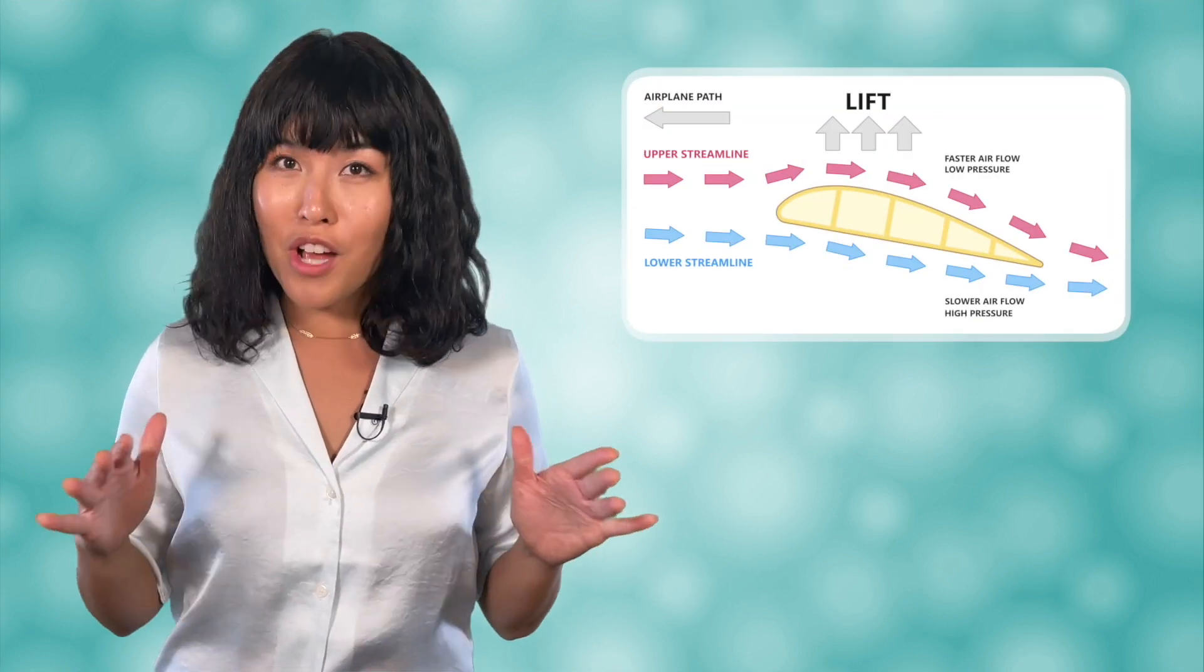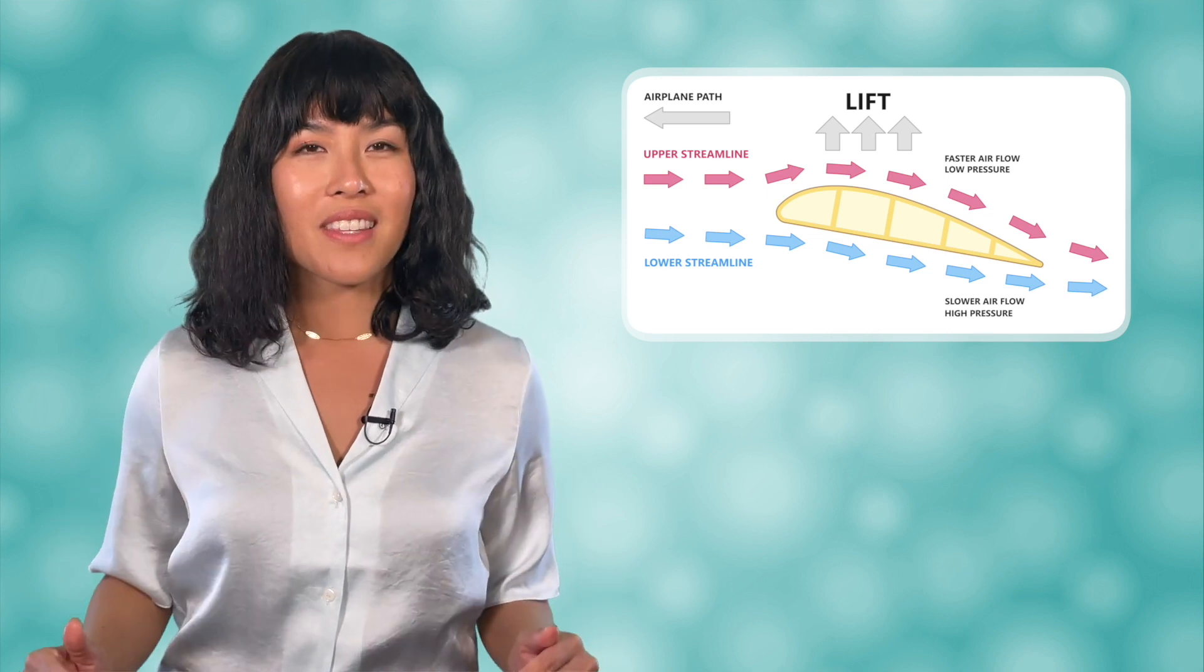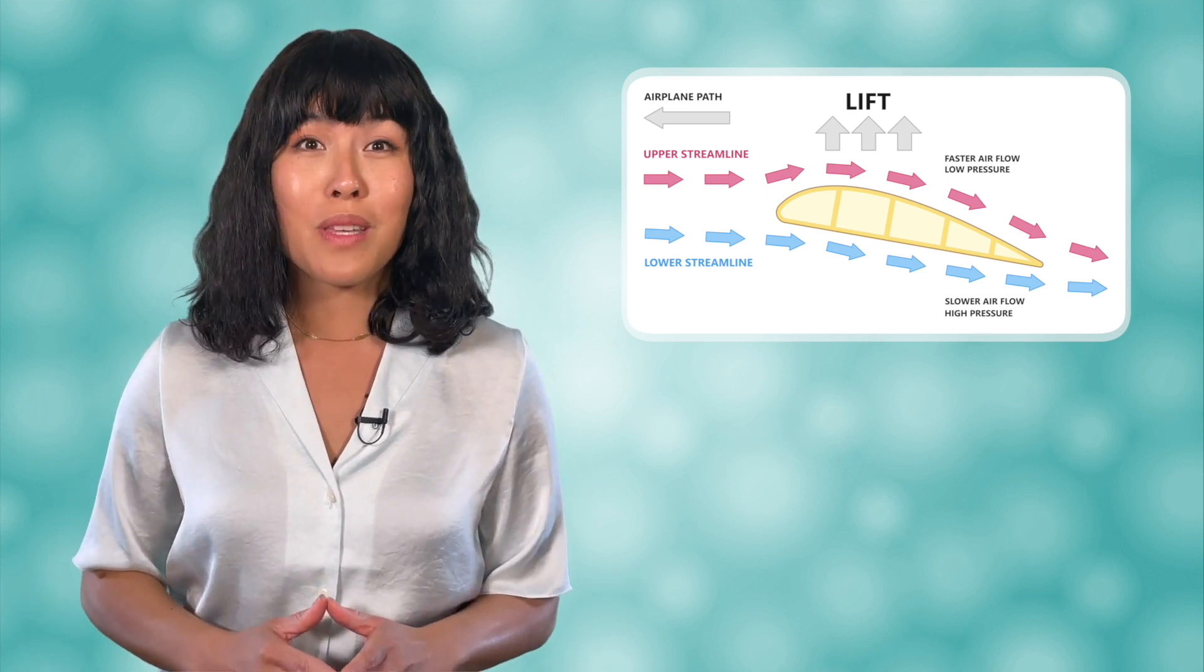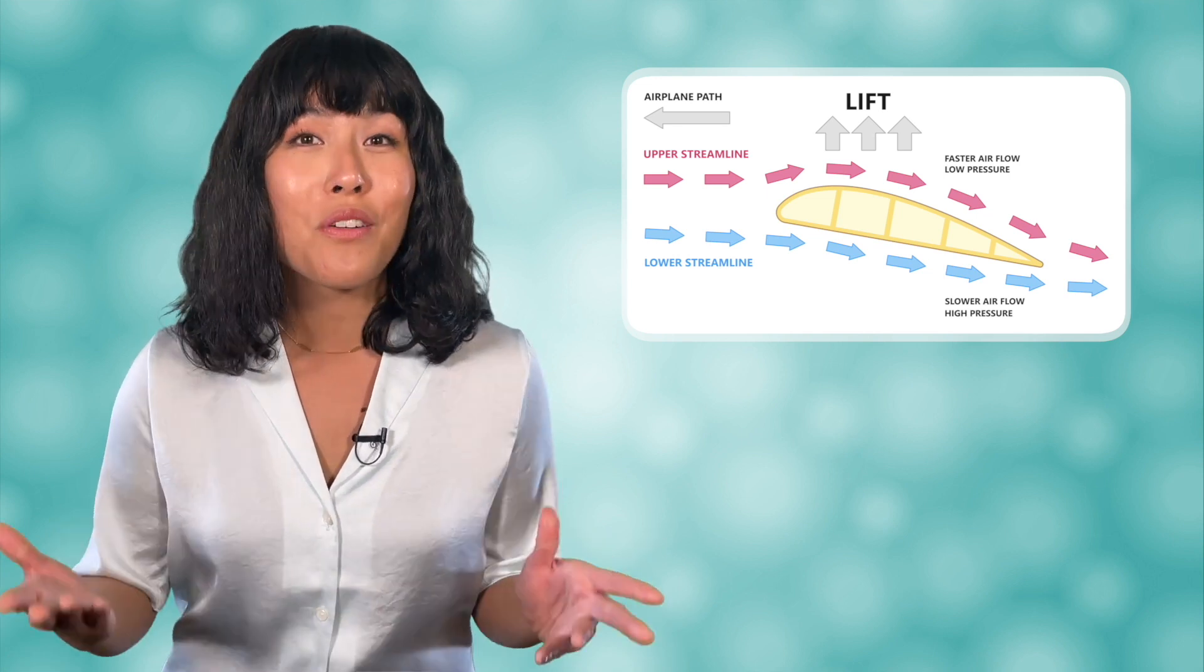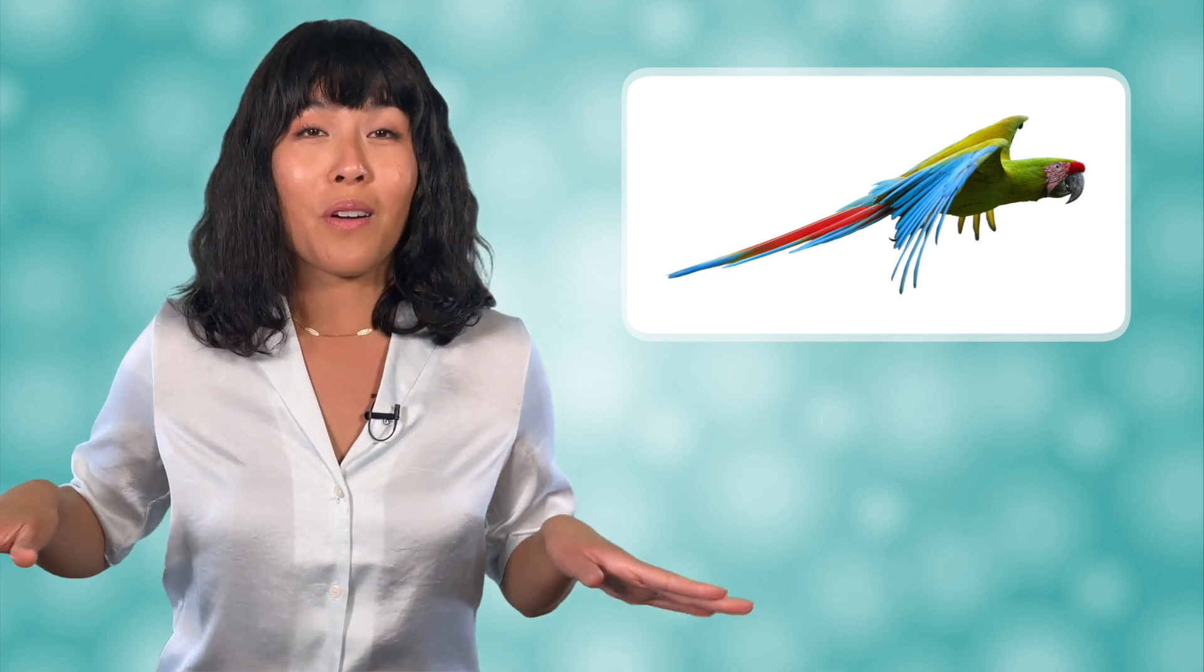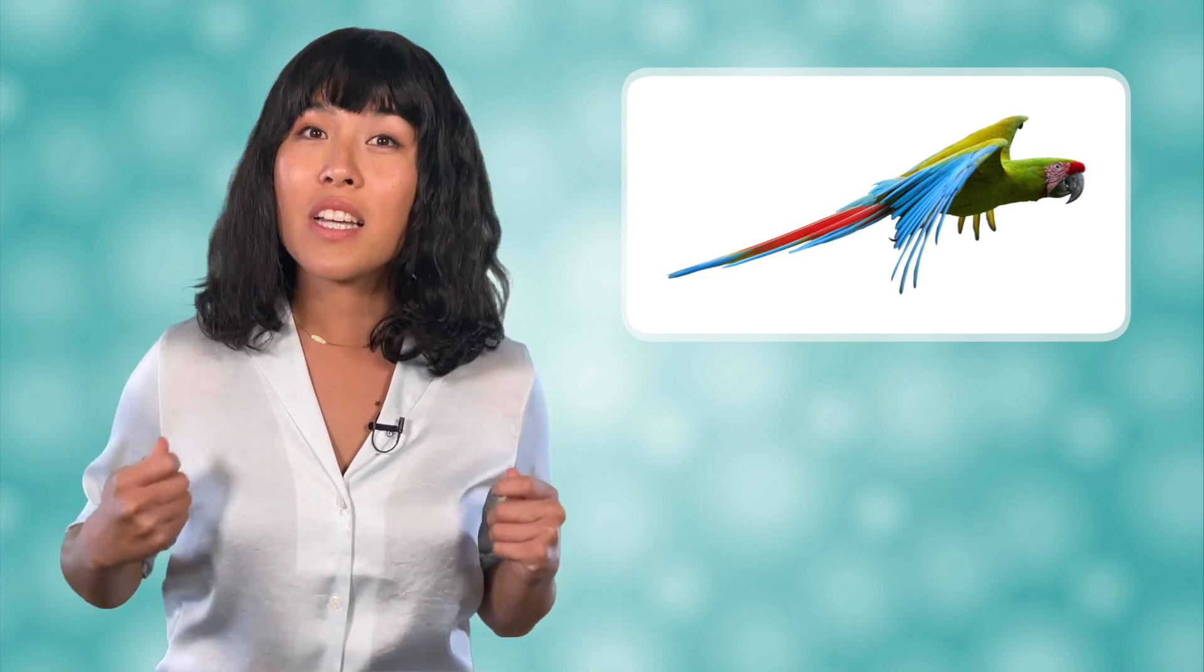Ever notice the shape of the wings on an airplane? They tend to be curved on top and flat or slightly curved underneath. This shape has been shown to be the most aerodynamic and is based on the shape of the wings of birds. The curved top forces air to flow down and back more quickly than it does underneath the wing which lifts the bird or the plane into the air. And in an effort to gain more power when flying, bird wings are attached to their super strong chest muscles.